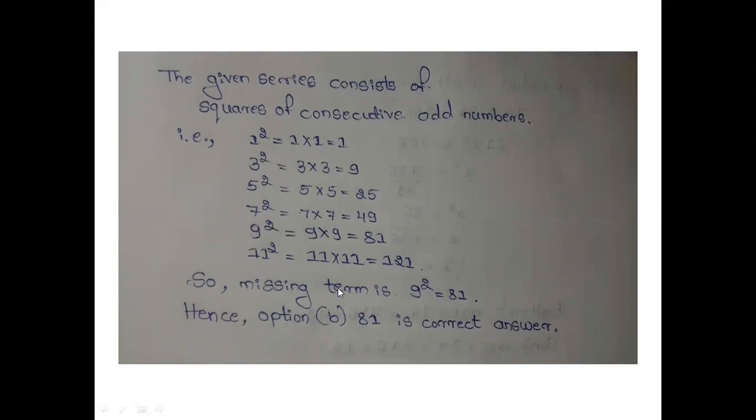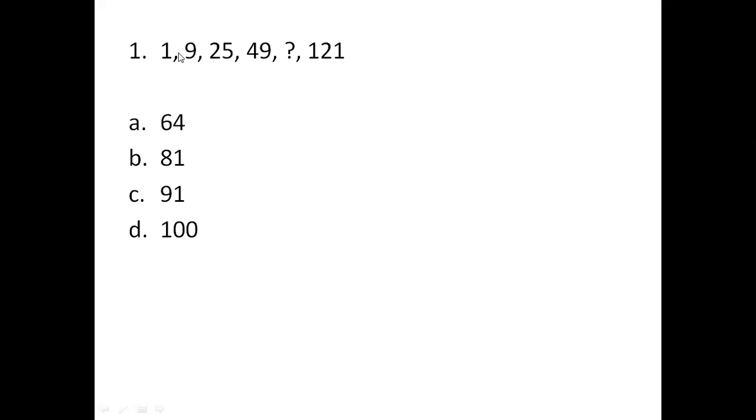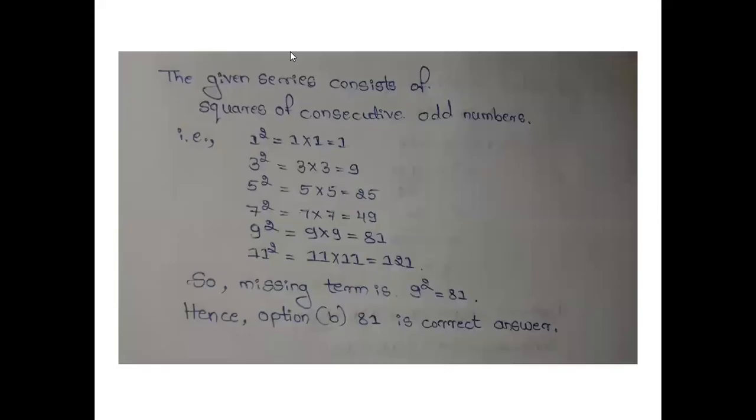So missing term is 1, 2, 3, 4, 5. So 5th place will be missing term. 49 and 81 will be found out, so missing term is 9 square, that is 81. Hence option B is the correct answer.